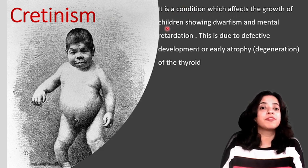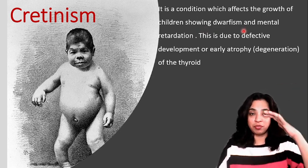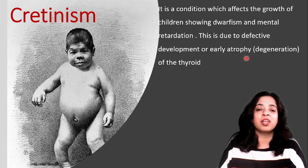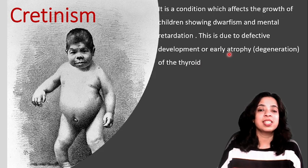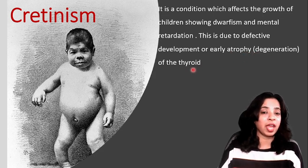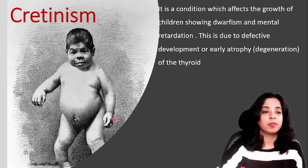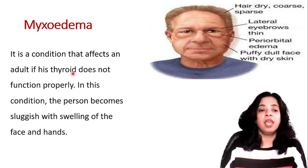The next disease is cretinism. It is a condition which affects the growth of children. Cretinism is seen in children showing dwarfism — the height of the child remains small — and mental retardation. This is due to defective development or early atrophy of the thyroid, meaning degeneration of the thyroid gland itself.